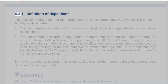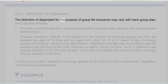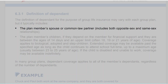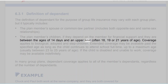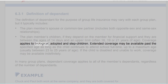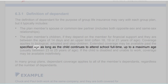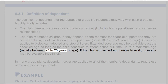6.3.1 Definition of Dependent. The definition of dependent for the purpose of group life insurance may vary with each group plan, but it typically includes the plan member's spouse or common-law partner (both opposite-sex and same-sex relationships), and the plan member's children if they depend on the member for financial support and are between the ages of 14 days and an upper limit — often 18, 19, or 21 years of age. Coverage applies to biological, adopted and stepchildren. Extended coverage may be available past the specified age as long as the child continues to attend school full-time, up to a maximum age usually between 23 to 25. If the child is disabled and unable to work, coverage may be available indefinitely.